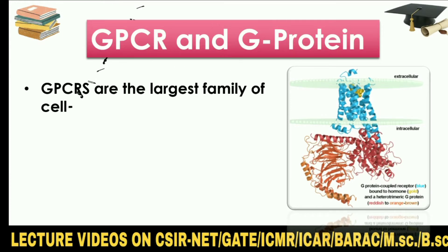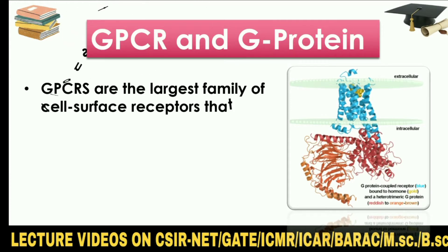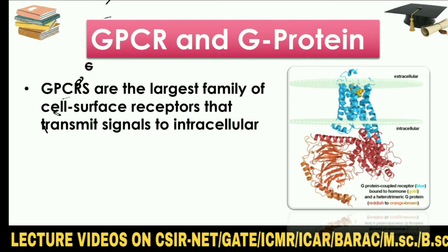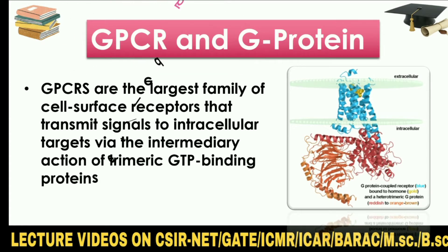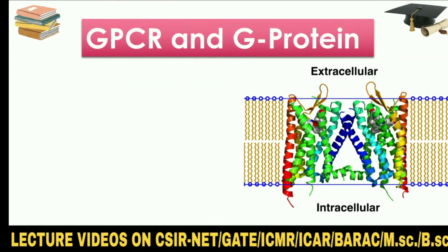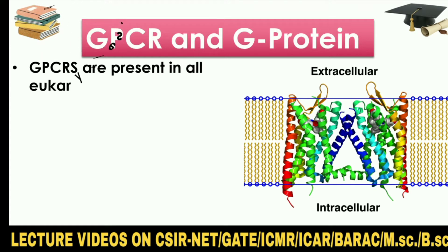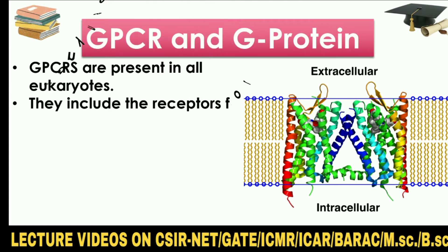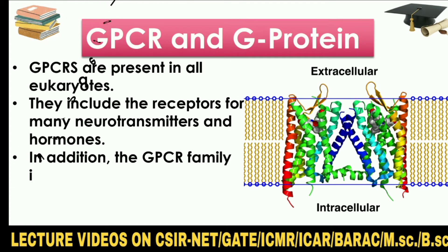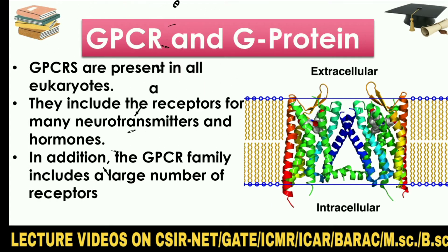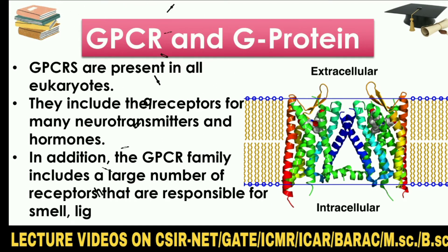GPCRs are the largest family of cell surface receptors that transmit signals to intracellular targets via the intermediary action of trimeric GTP-binding proteins called G-proteins. GPCRs are present in all eukaryotes. They include the receptors for many neurotransmitters and hormones. In addition, the GPCR family includes a large number of receptors responsible for smell, light, and taste.